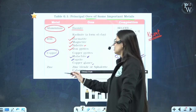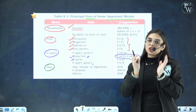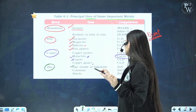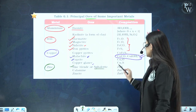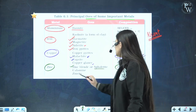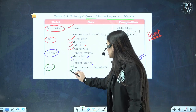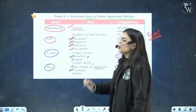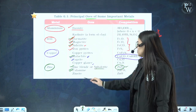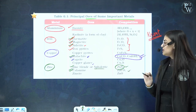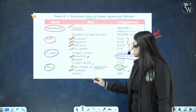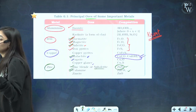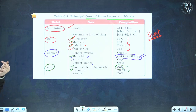For zinc: zinc blende or sphalerite has composition ZnS — very important. Then comes calamine — put double tick on calamine and malachite, hematite and magnetite. Calamine has composition ZnCO3. Zincite has composition ZnO. Kindly mark the ones I've highlighted so they are easy to remember.